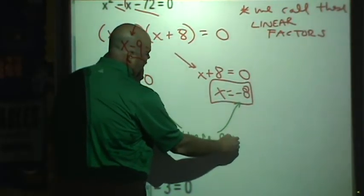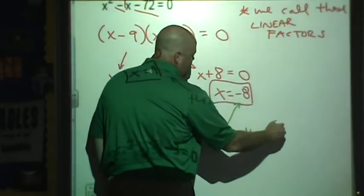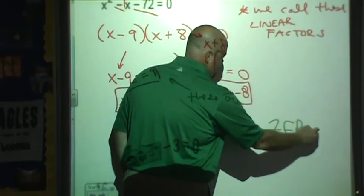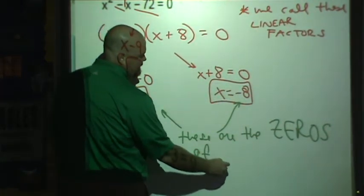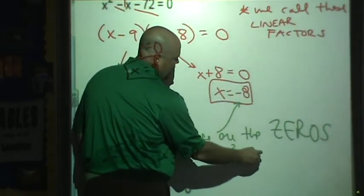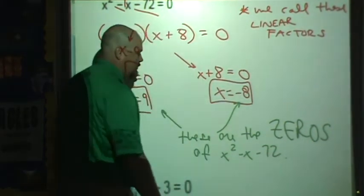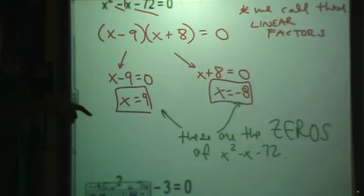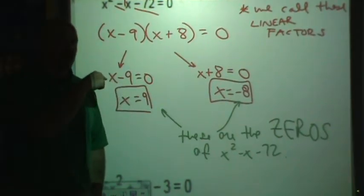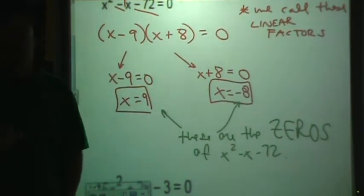These are the zeros of x squared minus x minus 72. They're the solutions to the equation because when I set the equation equal to zero, I get those numbers. They are called zeros.